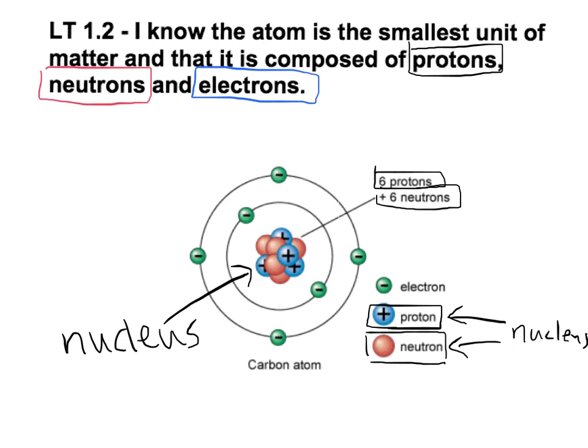On the outside, we have these green circles. They have little negative signs in them. They are electrons. The negative sign represents a negative charge. They live in what we call the electron cloud.